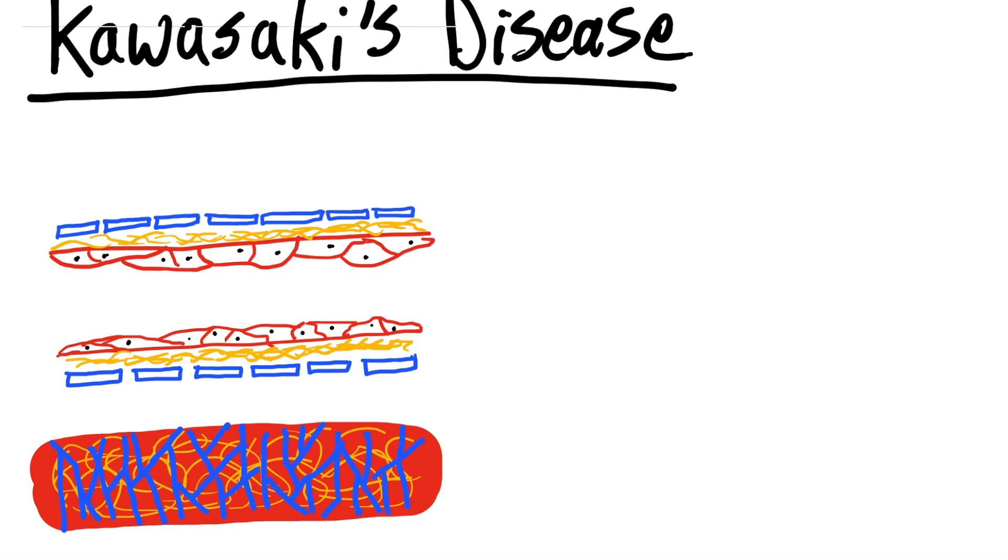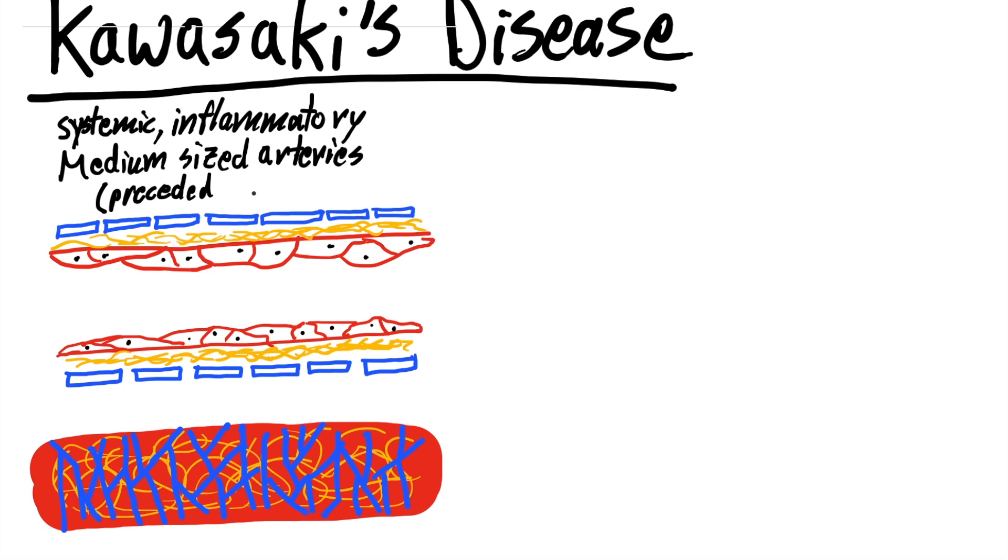Kawasaki's disease is somewhat of a challenging disease to get a good grasp on, mostly because a lot of it is unknown. Things we do know: it is a systemic inflammatory disease in pediatric patients that primarily affects medium-sized arteries. It is unknown what causes it. Some think it possibly is preceded by an infection that then causes the immune system to attack these medium-sized arteries, but no one knows for sure what causes Kawasaki's disease to come on.